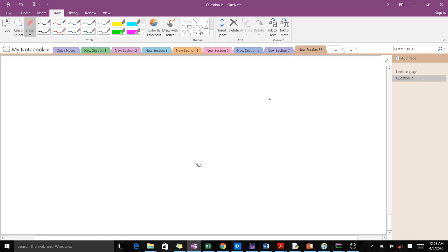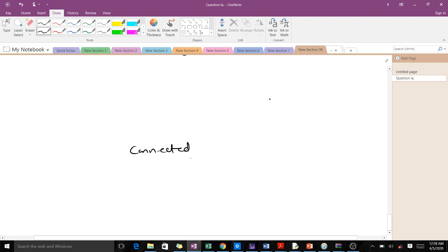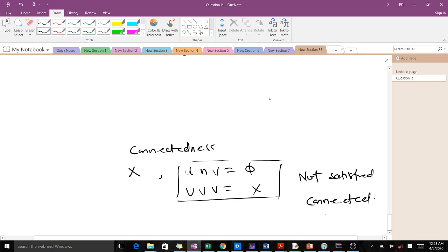Let's just take a small illustration of what we want to say. We are talking about connectedness. For a topological space X to be connected, there shouldn't be two non-empty disjoint open sets such that their union is also X. If this condition is not satisfied, then we say our topological space X is connected.